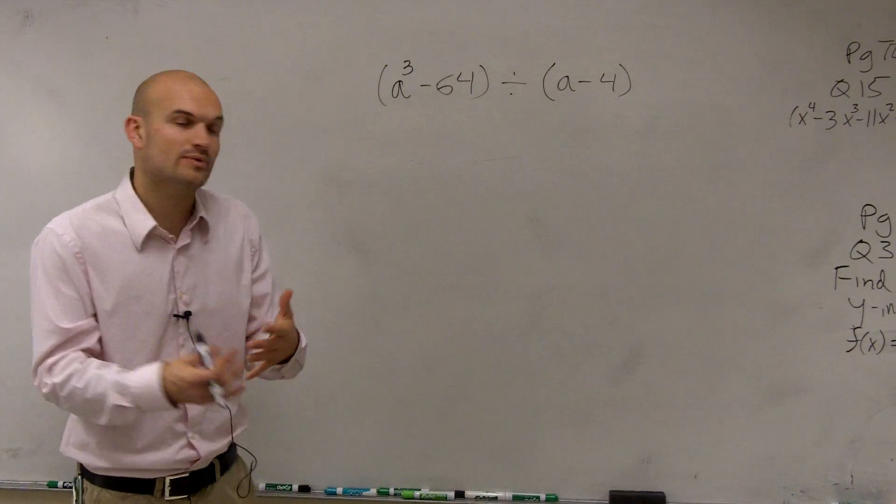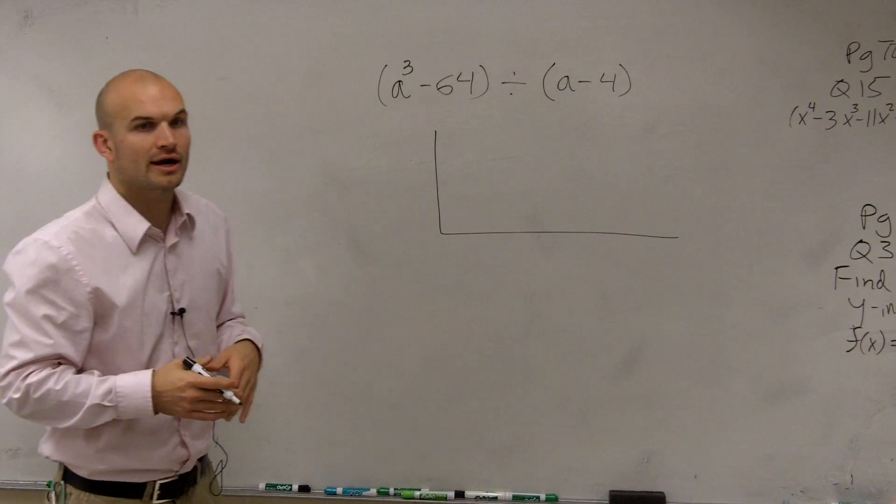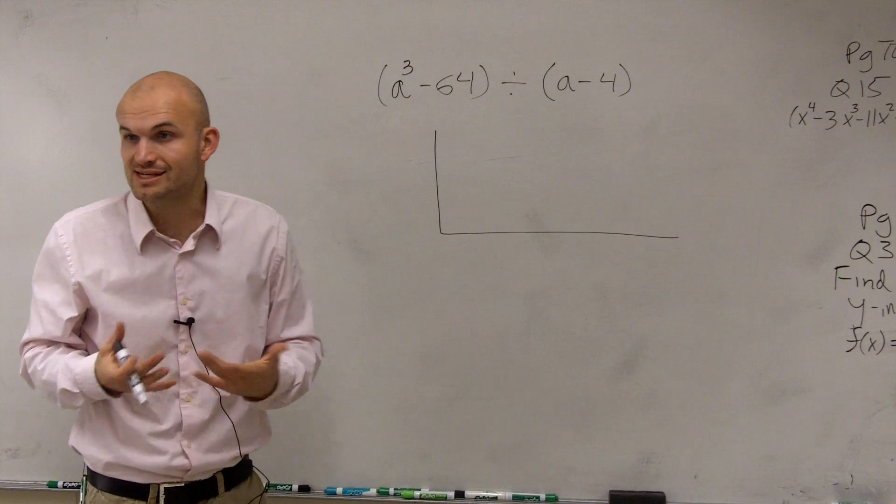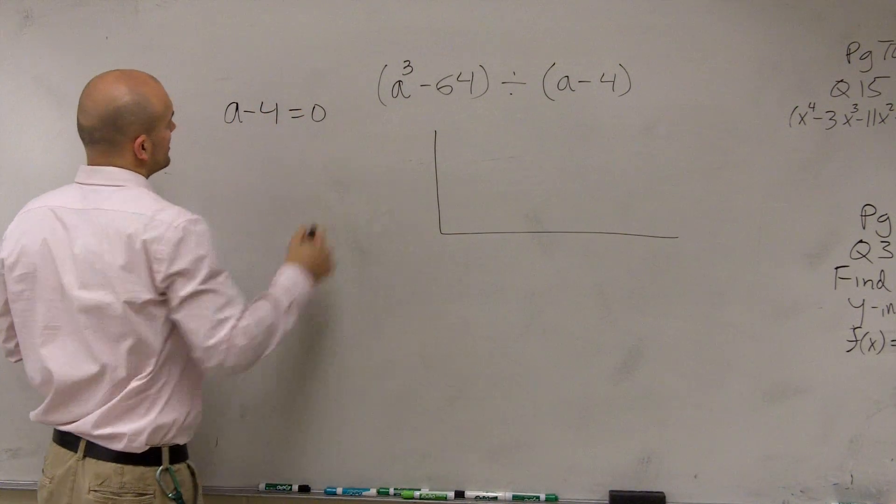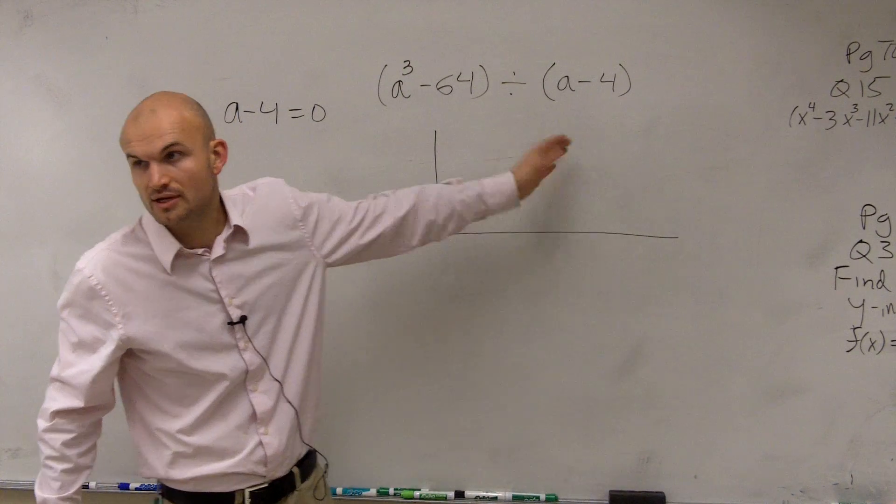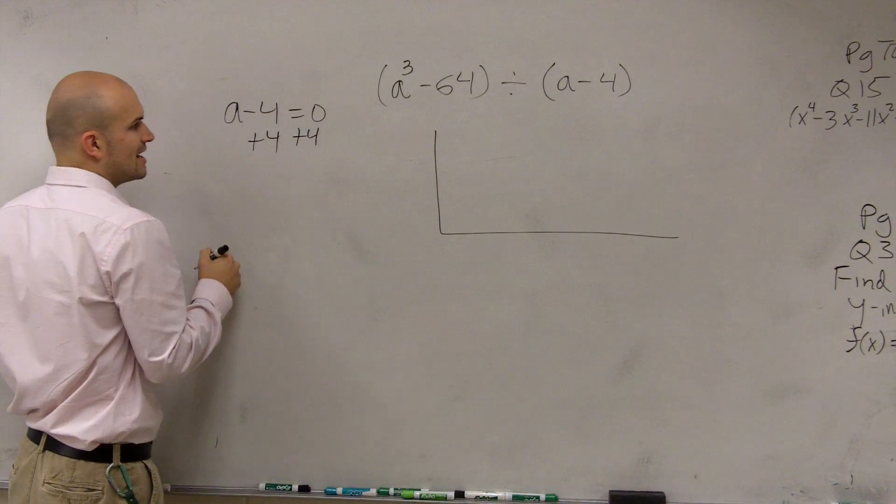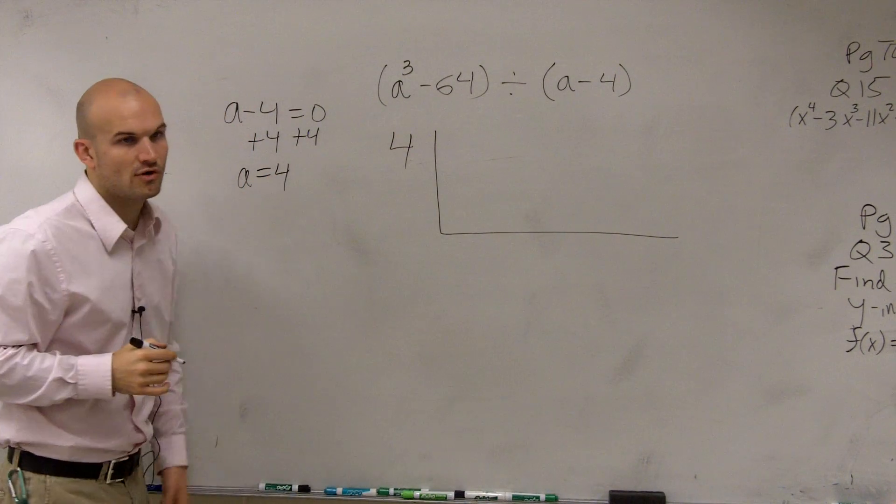First of all, by synthetic division, we create this little L box. Now what we're going to use as our divisor, we're actually going to use the 0. So we need to make sure that we solve this for 0. You're going to take your factor with your divisor and solve it for 0. Therefore, by adding 4 to both sides, you can now say that a equals 4. And that's what we're going to use for our synthetic division.